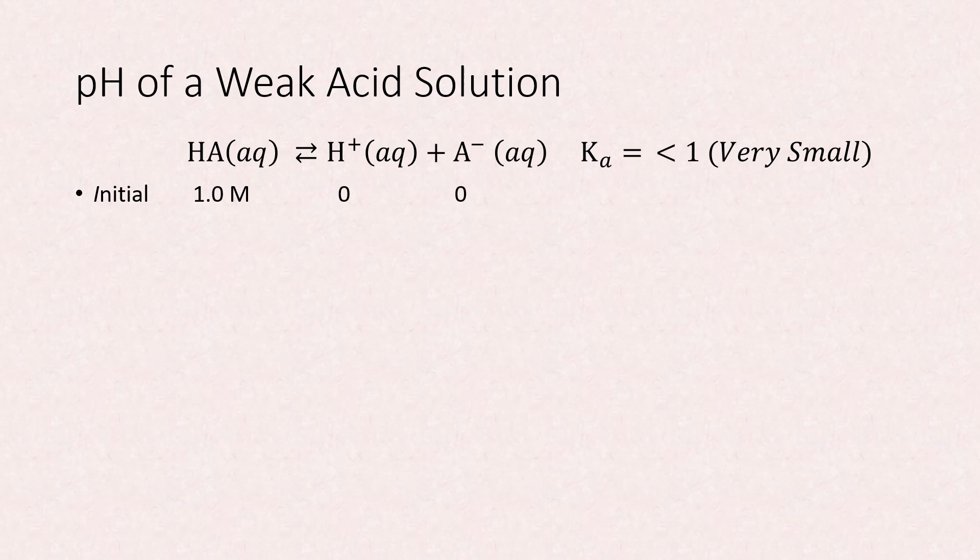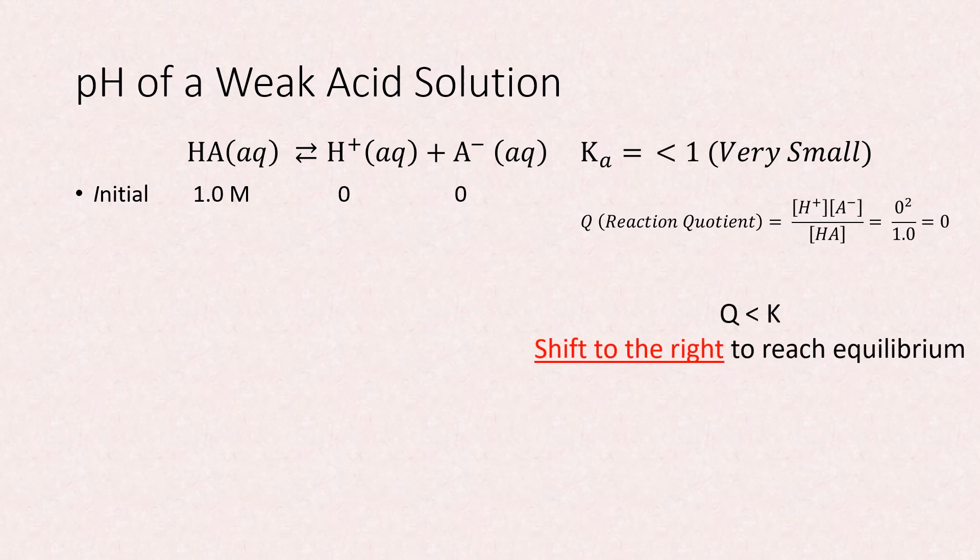We can set up a reaction quotient from the law of mass action and see that clearly Q is equal to 0. Thus, Q is less than K and there will be a shift to the right so the system can reach equilibrium.